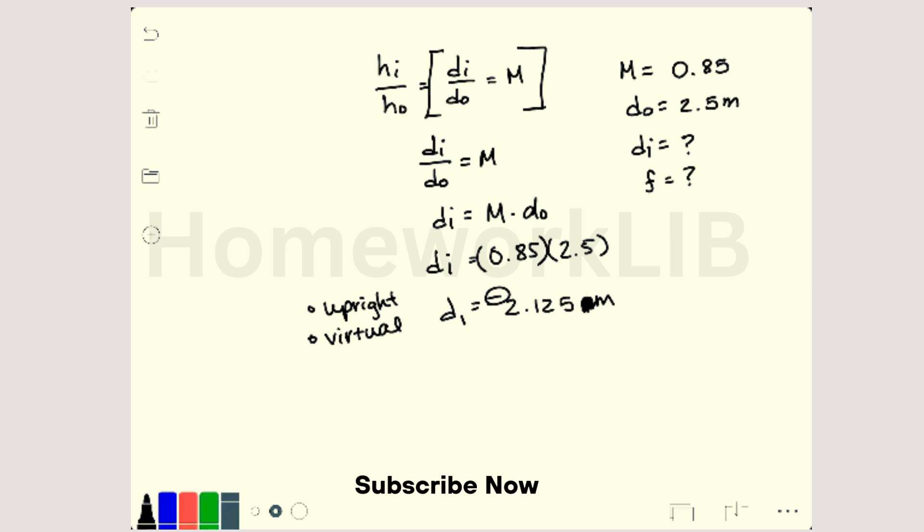Now for that we can use the mirror equation: 1 over do plus 1 over di equals 1 over f. Solving for f we get 1 over (1 over do plus 1 over di). Make sure that you are plugging in that negative di and you get a focal length of 14.2 meters.